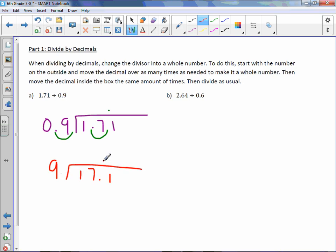9 goes into 17 once, which is 9. Subtract and get 8. Bring down the 1. 9 goes into 81, 9 times, which is 81. So our quotient here is 1.9.